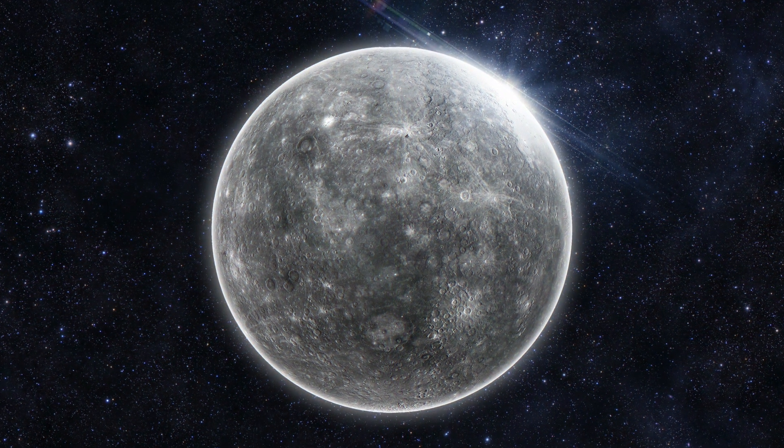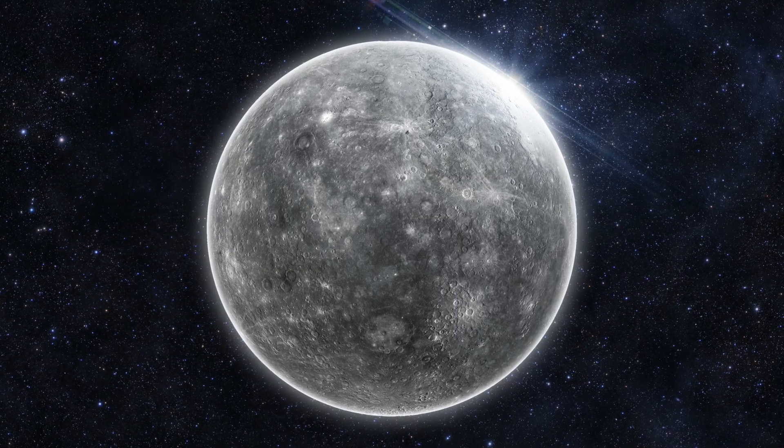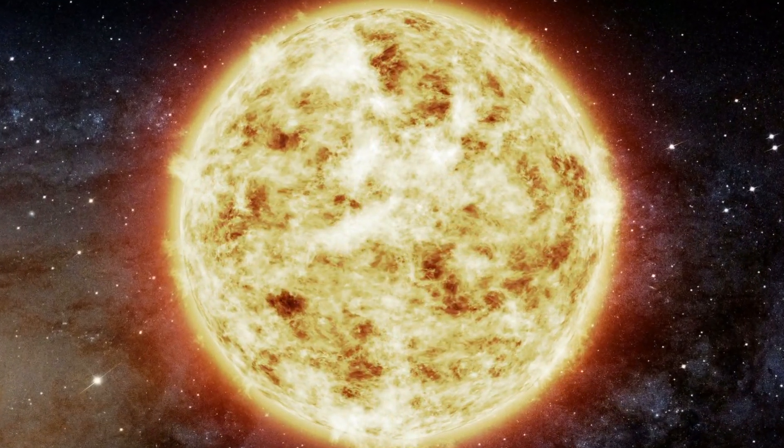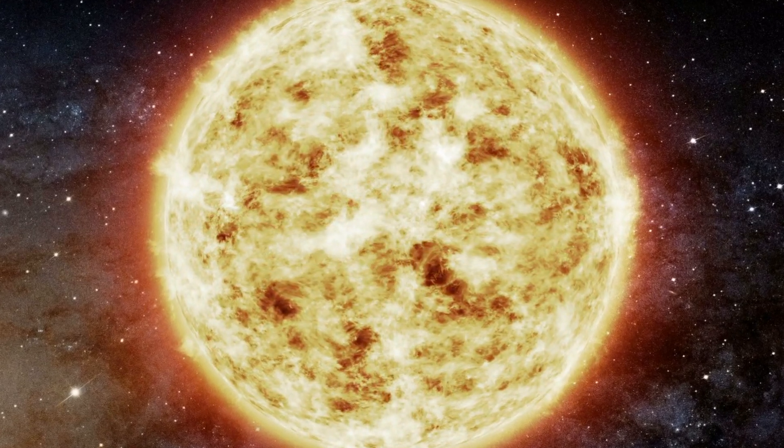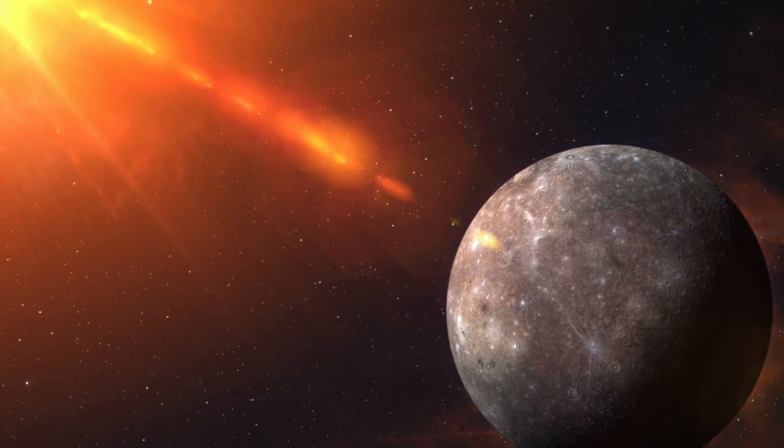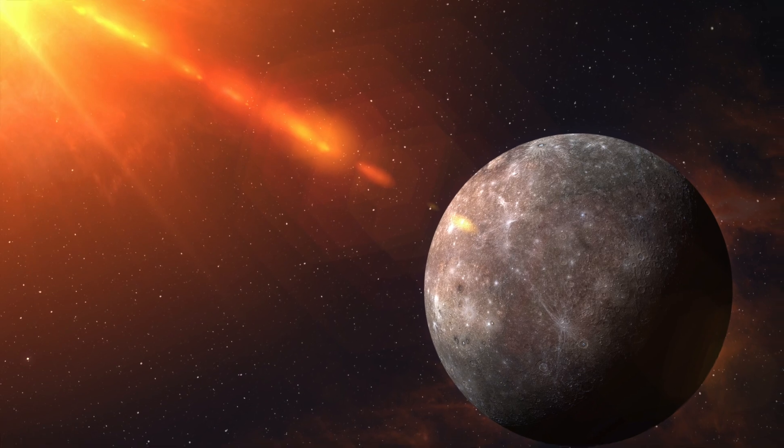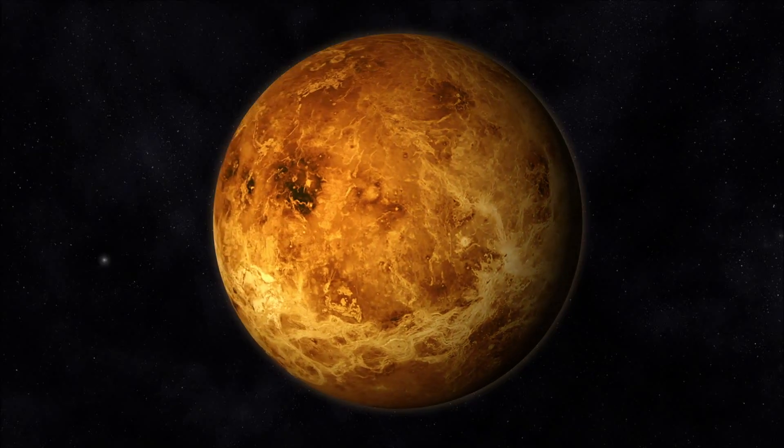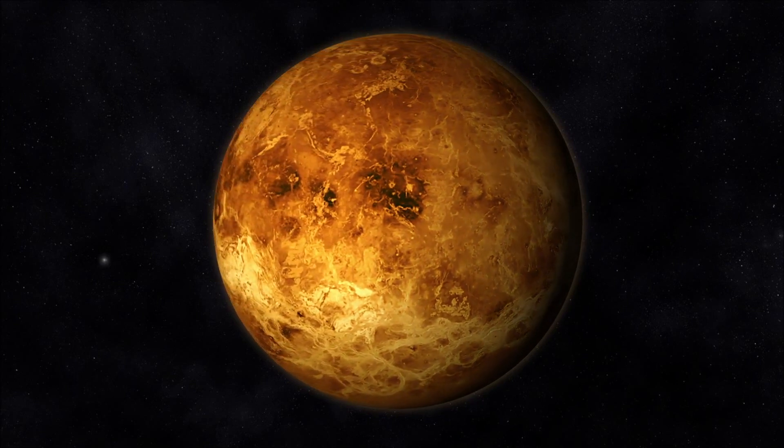From the surface of Mercury, the Sun would appear more than three times as large as when viewed from the Earth, and the sunlight would be up to seven times brighter. Despite its proximity to the Sun, Mercury is not the hottest planet in our Solar System. This title belongs to the nearby Venus, thanks to its dense atmosphere.